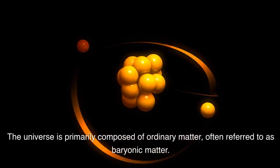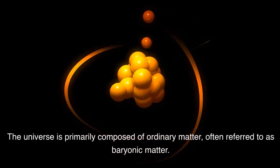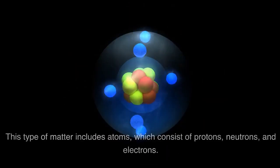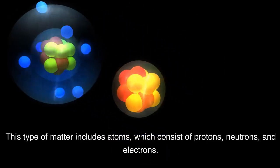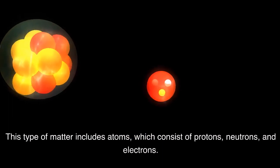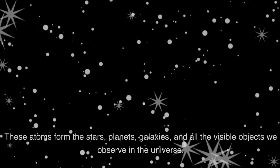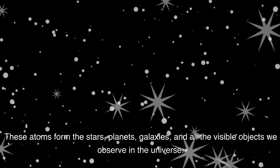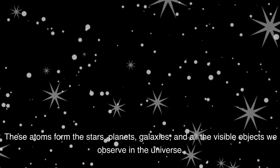The universe is primarily composed of ordinary matter, often referred to as baryonic matter. This type of matter includes atoms, which consist of protons, neutrons, and electrons. These atoms form the stars, planets, galaxies, and all the visible objects we observe in the universe.